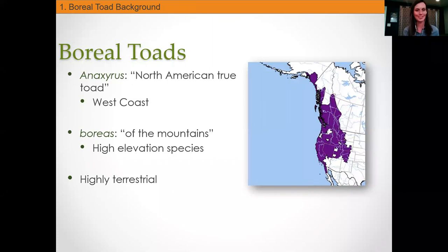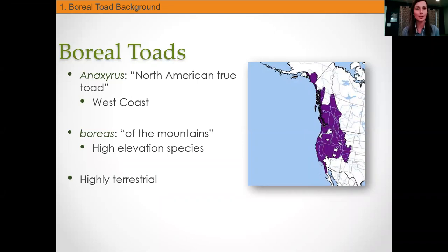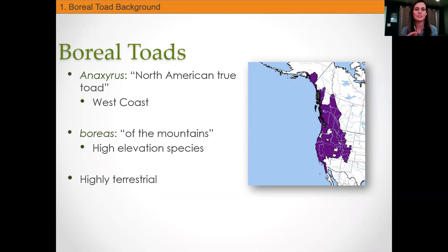Let's narrow it down to our superstar, the boreal toad. The scientific name is Anaxyrus boreas boreas. Anaxyrus is the genus of all North American true toads, which suits it well because it's found only in North America, along the west coast from Alaska down to Baja California. Boreas is ancient Slavic for 'of the mountains,' which is suiting because the boreal toad is a high-elevation species — you will only find them at 5,000 feet and above. They are a highly terrestrial toad; though you might think of amphibians hiding out in a pond, they're actually very terrestrial.